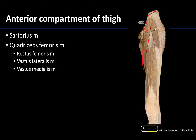Over here is a muscle you're not having to identify but it is quite visible — the tensor fasciae latae. It has a really short belly, starts at the anterior superior iliac spine as well, and inserts into the IT band, which is this very thick component of the deep fascia on the lateral side of the thigh. Similarly, the gluteus maximus will also have most of its fibers inserting on the iliotibial tract. The IT band is always lateral.